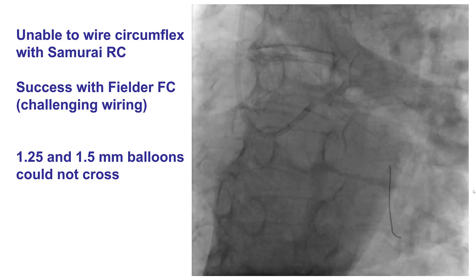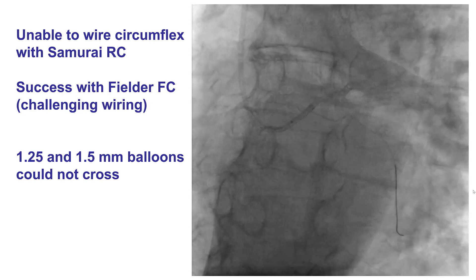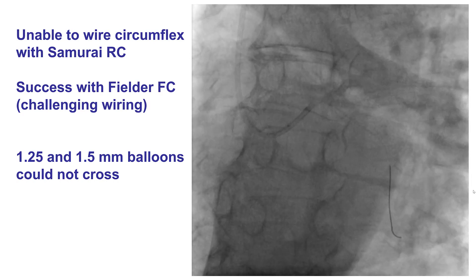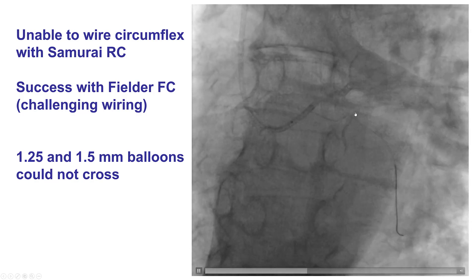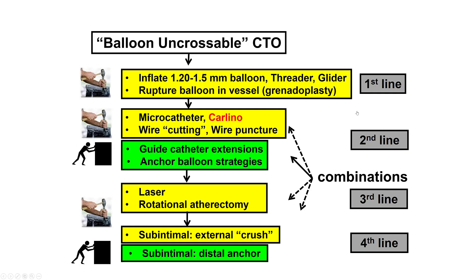We had significant difficulty wiring with the workhorse guide wire, but eventually were able to wire with the Fielder FC. However, we could not advance any small balloon through that proximal circumflex lesion. This is an algorithm for the situation when a wire crosses but a balloon won't cross. The usual strategy is to inflate a small balloon — 1.2 to 1.5mm; we now also have 1.0mm balloons that can be even more useful. If that doesn't work, options include atherectomy to modify the plaque, use of a microcatheter, or more support with a guide catheter extension or anchor technique. If this still doesn't work, use laser, rotablator, and eventually subintimal techniques.